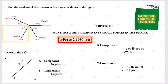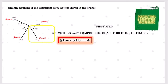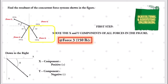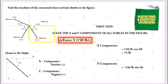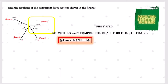Next is Force 3, also 150 pounds, going down to the right. For this direction, the x component is positive and the y component is negative. The x component is positive 150 pounds multiplied by cosine 60, giving 75 pounds. The y component is negative 150 pounds sine 60, giving negative 129.90 pounds.